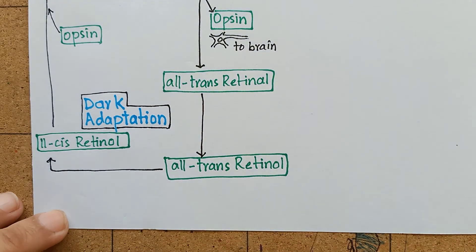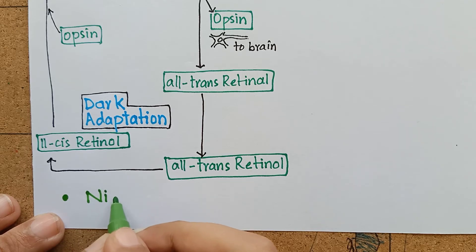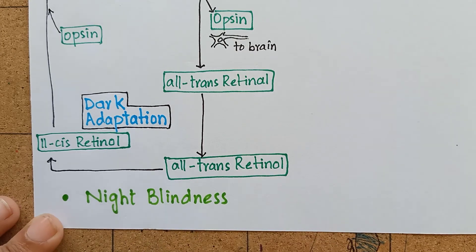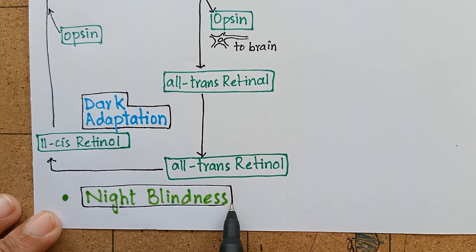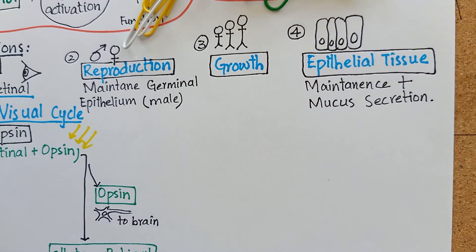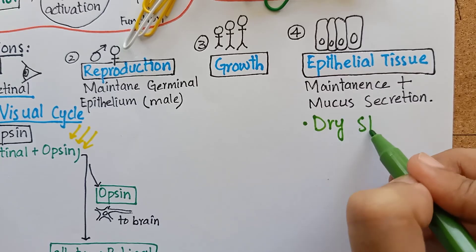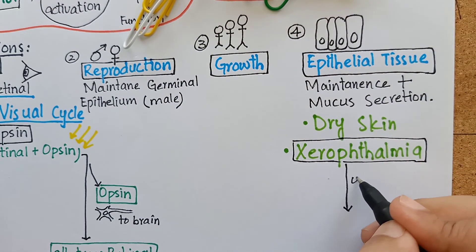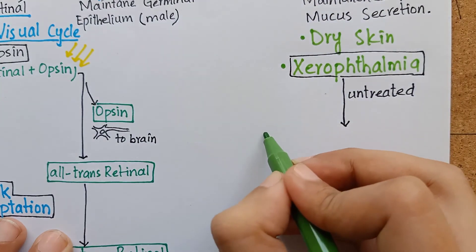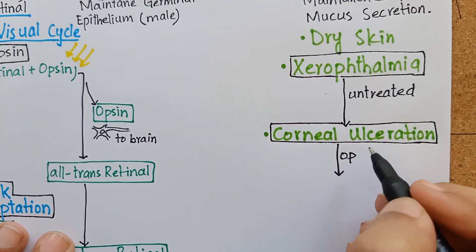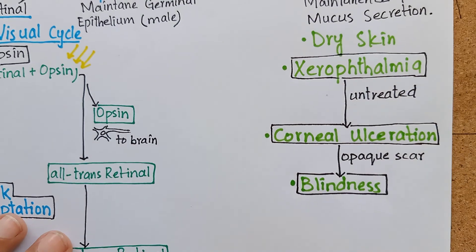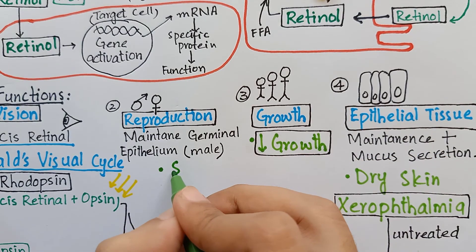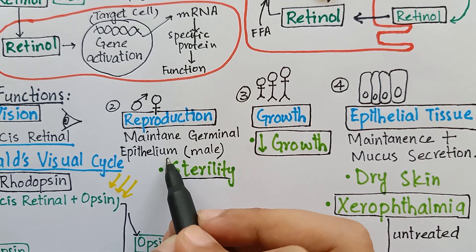The importance of this visual cycle is that one of the earliest signs of vitamin A deficiency is night blindness. Prolonged deficiency of vitamin A can also lead to irreversible loss of rod cells. Other deficiency manifestations include rough and dry skin. Severe vitamin A deficiency leads to xerophthalmia, which is a pathological dryness of the conjunctiva and cornea. Untreated xerophthalmia can result in corneal ulceration and ultimately blindness due to the formation of an opaque scar. Vitamin A deficiency also results in decreased growth rate in children and sterility in males due to degeneration of germinal epithelium.